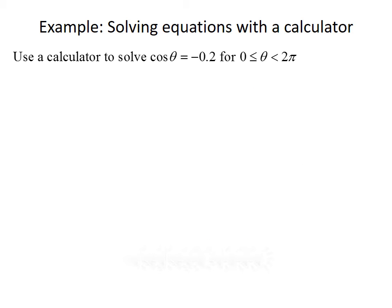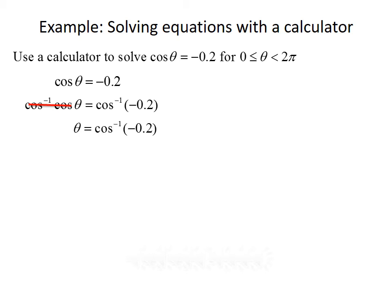Next, we want to do an example where we solve equations using a calculator. Our example says use a calculator to solve cosine of theta equals negative 0.2 on the interval from 0 to 2π. Since cosine of theta is already isolated, we take the inverse cosine of both sides. The inverse cosine of negative 0.2 gives us theta equals 1.77, rounded to two decimal places. Be sure your calculator is in radian mode, since the interval from 0 to 2π represents radians.